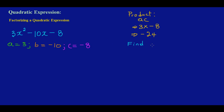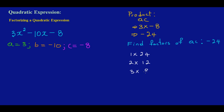Now I need to find the factors of AC, which is negative 24. The factors of 24 are: 1 times 24, 2 times 12, 3 times 8, and 4 times 6. The key thing is that we need a pair of factors that when multiplied give negative 24, but when added give negative 10.